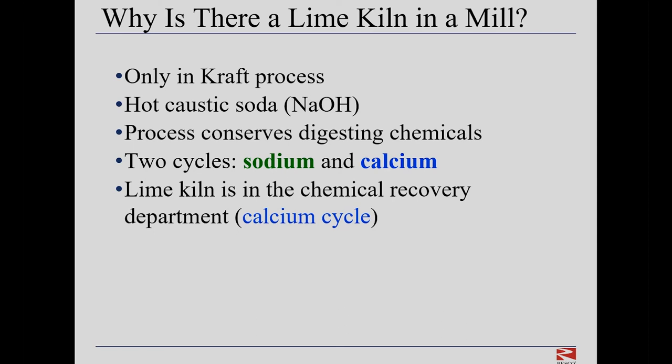The kraft process uses hot caustic soda to separate the fibers contained in the wood chips. Importantly, the process conserves the digesting chemicals through a chemical recovery process. There are two chemical cycles in the kraft mill: the sodium cycle and the calcium cycle. The lime kiln is in the chemical recovery department and is the key vessel in the calcium cycle. The kiln operation is often at the mercy of a much larger process that includes six other steps that sometimes get out of balance or temporarily shut down.